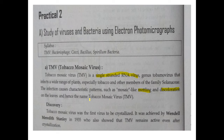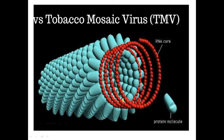Tobacco Mosaic Virus was the first virus to be crystallized, and this was achieved by Wendell M. Stanley in 1935, who also showed that TMV remains active even after crystallization. Let us now see its structure.